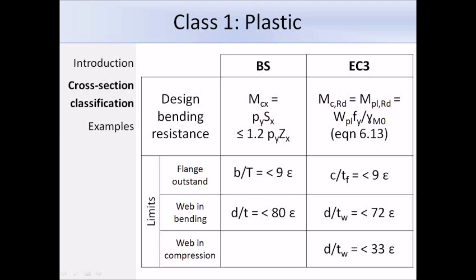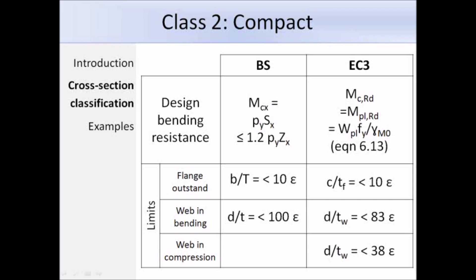For class 2, there are minor changes in the class limits between BS 5950 and Eurocode 3, but the design bending resistance is exactly the same as for class 1. Therefore the design bending resistance expression for classes 1 and 2 is the same: the plastic modulus times the yield strength divided by a partial factor. This is equation 6.13 in Eurocode 3.